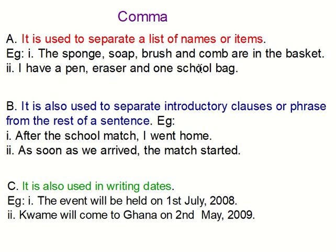The first one we are about to look at is the comma. What then is a comma? It is used to separate a list of names or items. What this means is that we use the comma to separate the items on a list or names. Let's look at some examples. The first instance: sponge, soap, brush and comb are in the basket. Each of them is separated by a comma, and the last one uses 'and' to show that the items are ending.